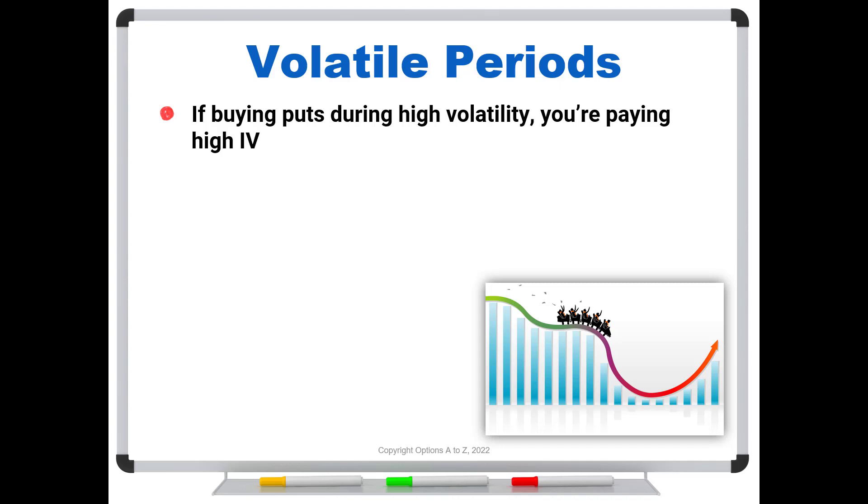And that usually only gets worse or more extreme as you go further away from at the money. And unfortunately when most traders are trying to trade puts during these volatile times, because these puts get so expensive, they do that. They go 10, 15, 20 points out of the money and they don't realize that you are really paying a lot for that in terms of implied volatility.